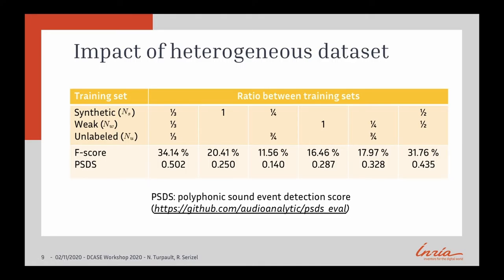Here are the results of our experiment. We tried using all sets equally — that's our baseline — and we had 34.14% F-score. Then we tried only synthetic data, only weak data, and we saw that most of the time there is a huge degradation of performance, meaning each of the sets is very important to combine. As you can see in the last column, the most important datasets are actually the synthetic and weakly labeled data, because we already have 31% without unlabeled data. So the information brought by the unlabeled data is small, but still important.